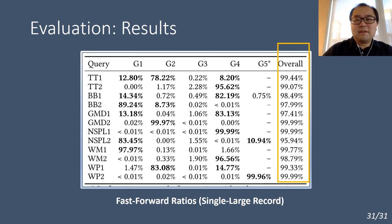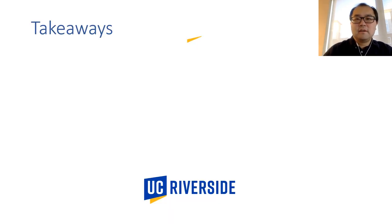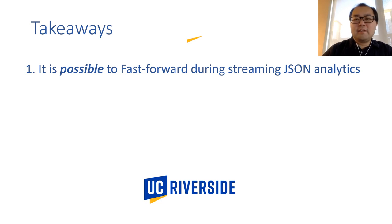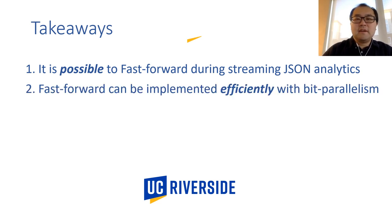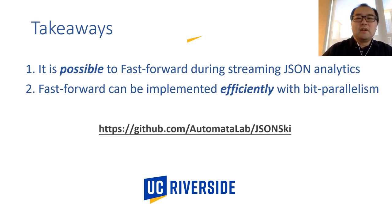A main reason behind this is that our solution can perform fast-forward in both the matched and unmatched cases. In summary, here are a couple of takeaways from this work. First, we find that it is actually unnecessary to scan the data stream in detail for evaluating JSON queries — there are a lot of opportunities to fast-forward over many data segments. Second, we have demonstrated that fast-forward optimizations can be implemented very efficiently by leveraging bitwise parallelism. We have already released a prototype of JSON-Ski on GitHub. Please feel free to check it out and let us know if you have any questions. Thank you for your attention.